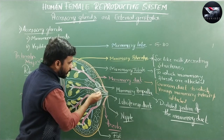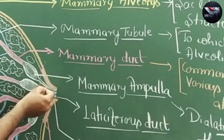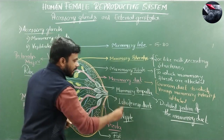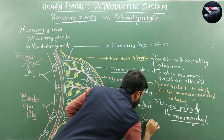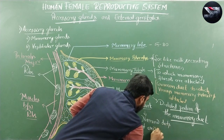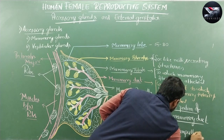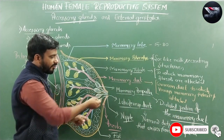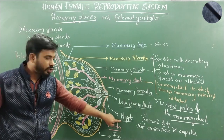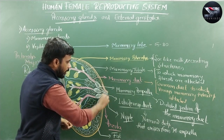From each mammary ampulla, a narrow duct arises called the lactiferous duct. These lactiferous ducts are generally accumulated in the nipple of the mammary gland. There are many lactiferous ducts in this region. The tip of the mammary gland is called the nipple.